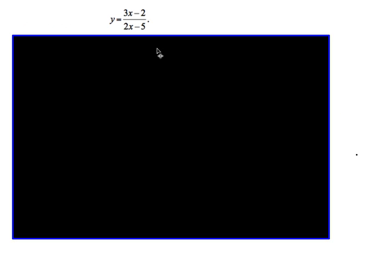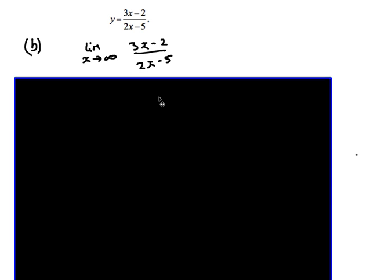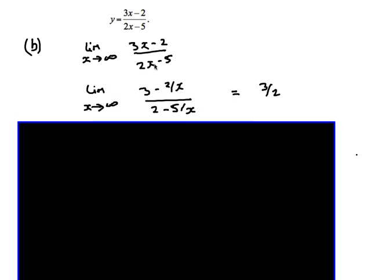To find the horizontal asymptote, we ask what happens as x approaches infinity for this fraction. The trick is to find the highest power of x — in this case just x — and divide every single term in the fraction by that power. We end up with 3 minus 2 over x, all over 2 minus 5 over x. As x approaches infinity, 2 over x and 5 over x both become 0, leaving us with 3 over 2 as our horizontal asymptote.